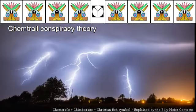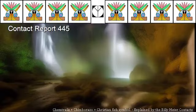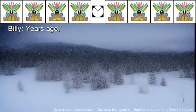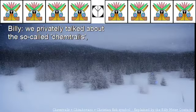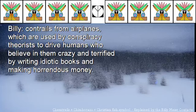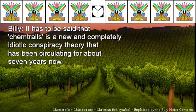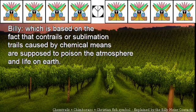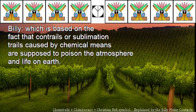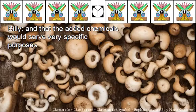Chemtrail Conspiracy Theory — Contact Report 445. Years ago, we privately talked about the so-called chemtrails, contrails from airplanes, which are used by conspiracy theorists to drive humans who believe in them crazy and terrified by writing idiotic books and making horrendous money. Chemtrails is a new and completely idiotic conspiracy theory circulating for about seven years, based on the claim that contrails caused by chemical means are supposed to poison the atmosphere and life on Earth. The inventors and supporters claim that condensed aircraft exhaust fumes would contain chemical additives serving very specific purposes.